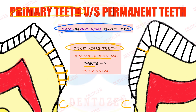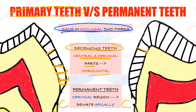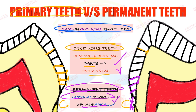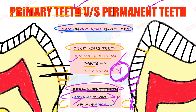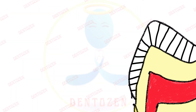In permanent teeth, the cervical region is different. The rods are not horizontal; instead they deviate apically — that is, towards the apex of the root. So the difference is: horizontal in primary teeth versus apically directed in permanent teeth in the cervical region. This is an important viva question.